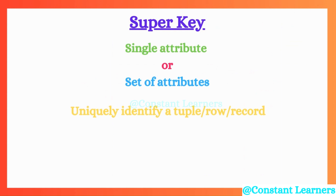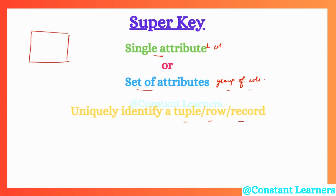Let's get to the first key: the super key. Super key is a single attribute — attribute means column — or a set of attributes, that is a group of columns, that can help us to uniquely identify a tuple, row, or record. So in a table, we could use either a single column as a super key or a set of multiple columns as a super key.